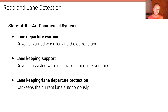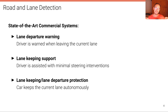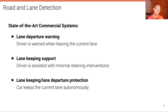And then finally there's lane keeping and lane departure protection, which are systems that keep the car in the current lane autonomously. For example, when you're riding in a traffic jam, these systems can automatically steer the vehicle for you.